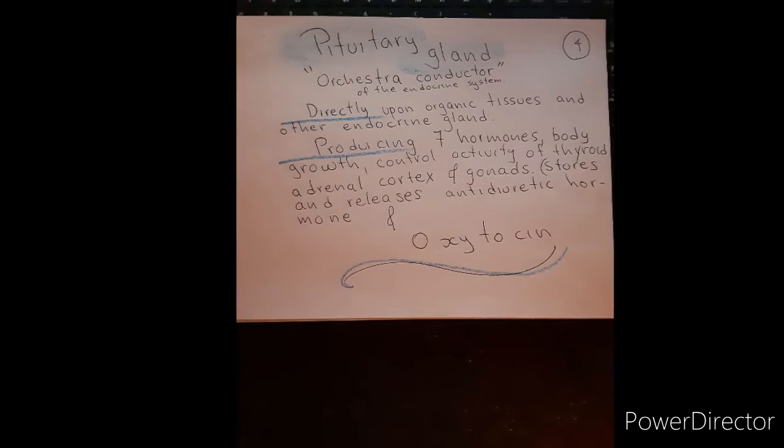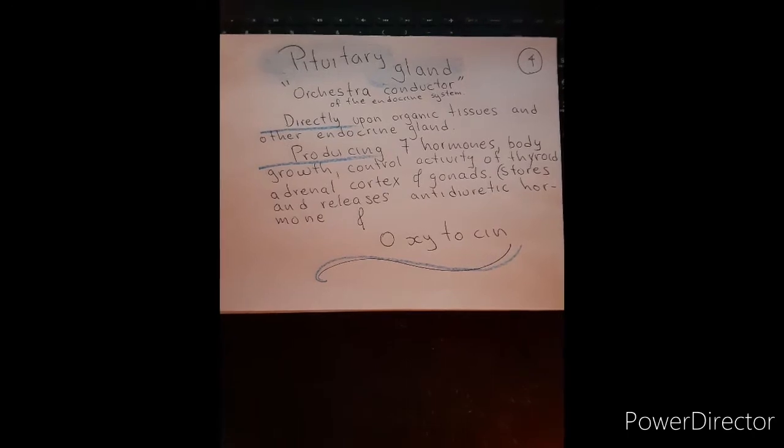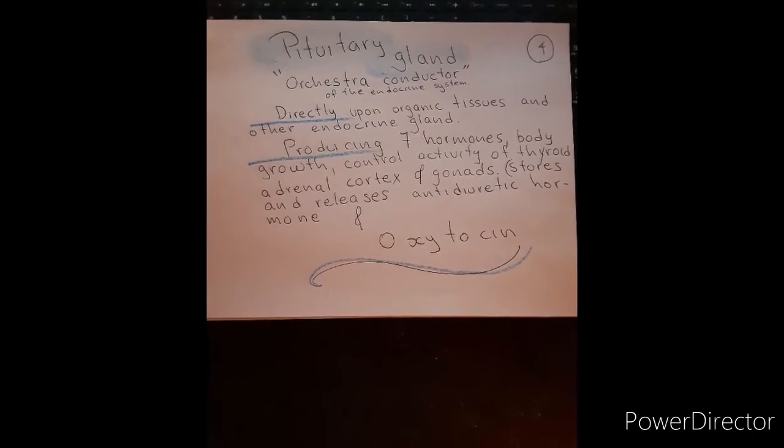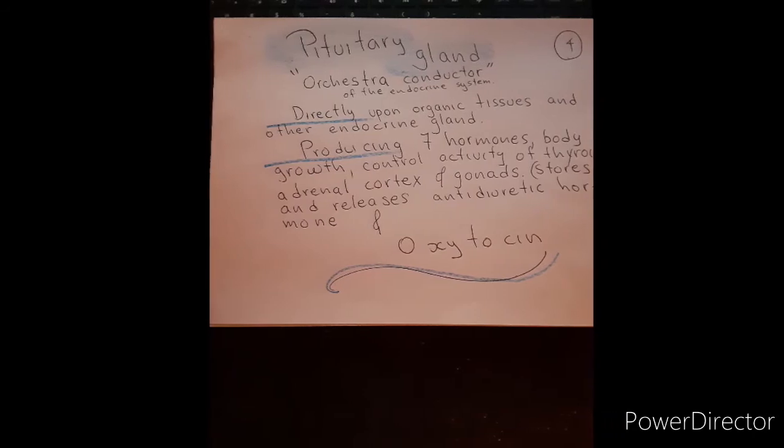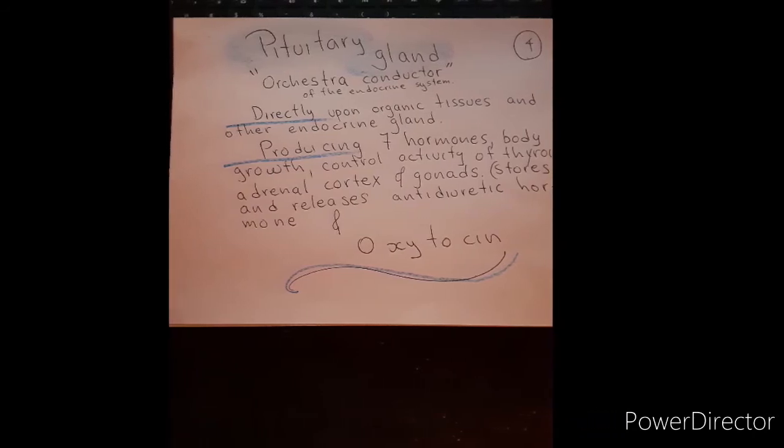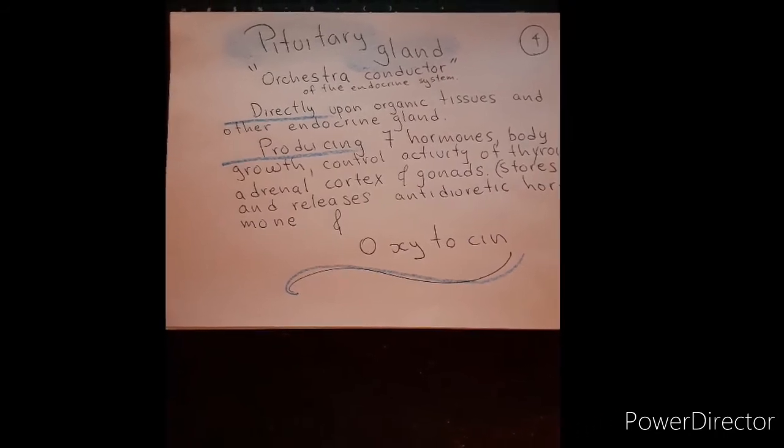The pituitary gland is the conductor of the orchestra of the endocrine system, directly upon organic tissue and other endocrine glands, producing seven hormones, body growth, control activity of thyroid, adrenal cortex and gonads, stores and releases antidiuretic hormone and oxytocin.